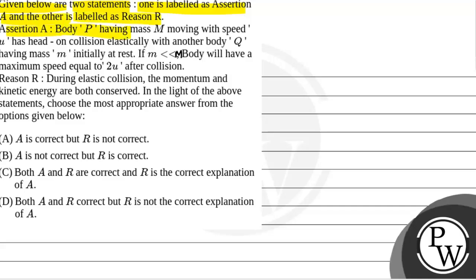Assertion A: Body P having mass M moving with speed U has a head-on collision elastically with another body Q having mass M initially at rest. If M is much less than small m, body Q will have a maximum speed equal to 2U after collision.